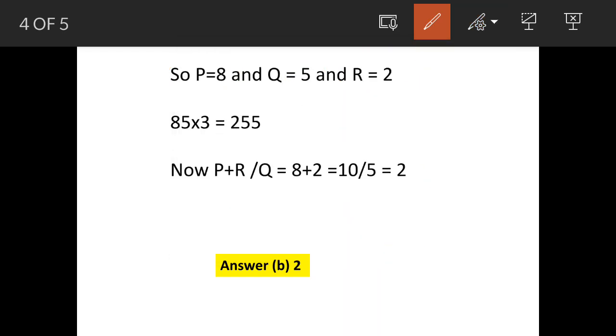I will just remove. So let us see this again. P+R divided by Q. So P is 8. 8+2 is 10 divided by Q, that is 5. So 10 divided by 5 we get 2. So 2 is the answer. So the answer is option B, 2.